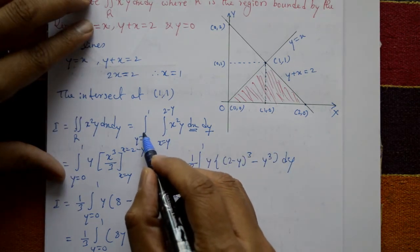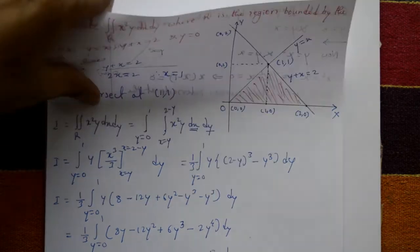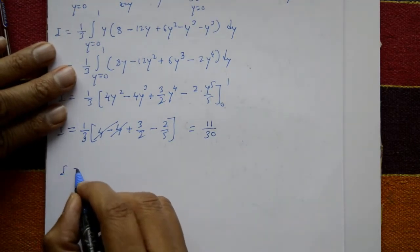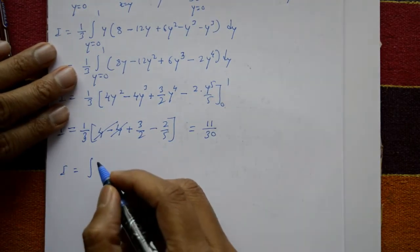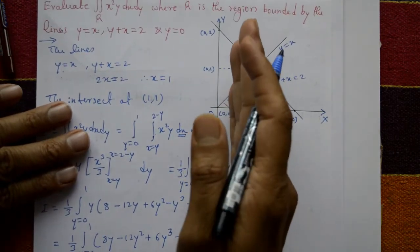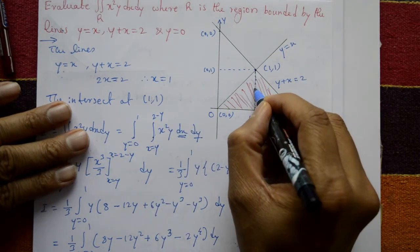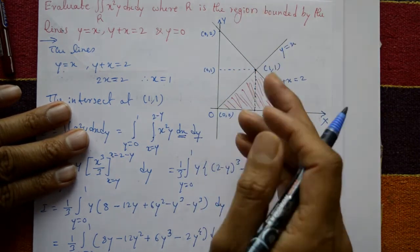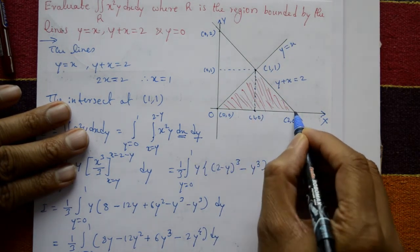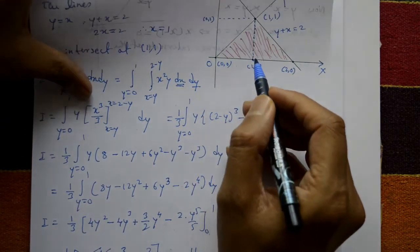Now for an alternate method: integrate first with respect to y, then with respect to x. We interchange the order. Take x first — the region is divided into two parts: x from 0 to 1, and x from 1 to 2.